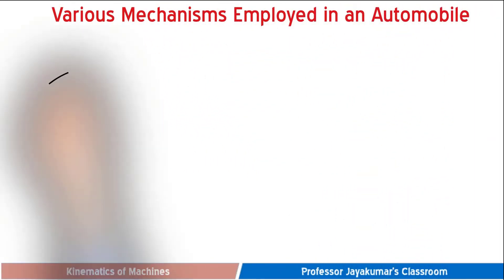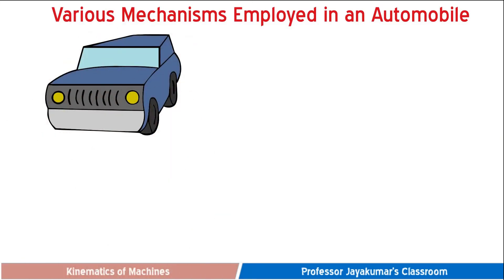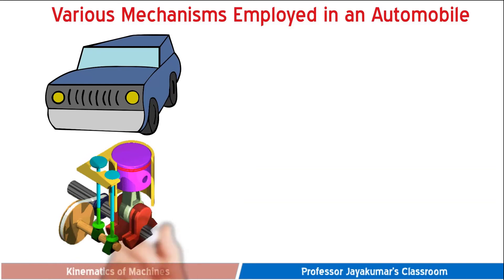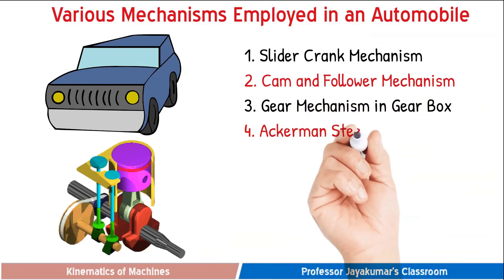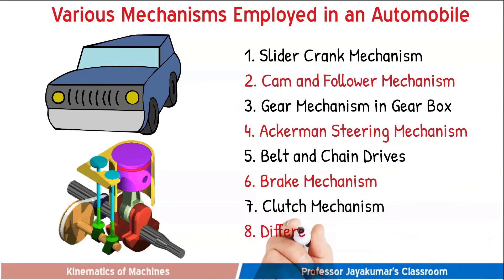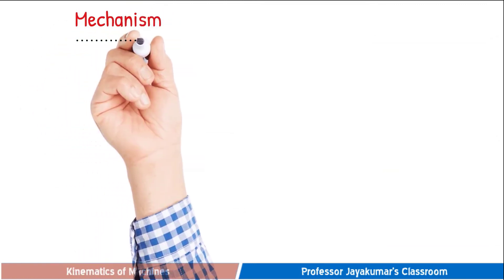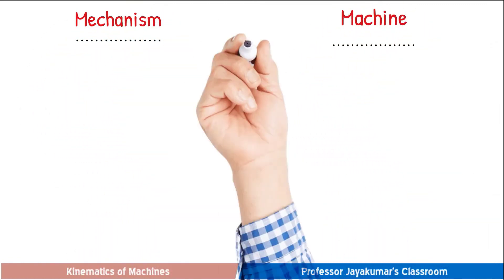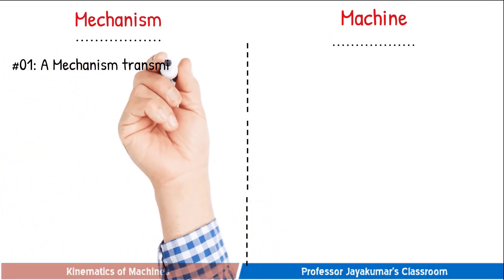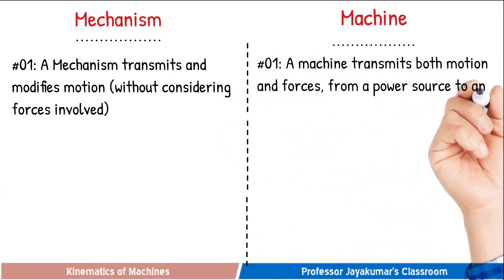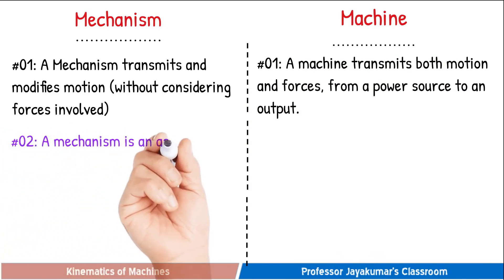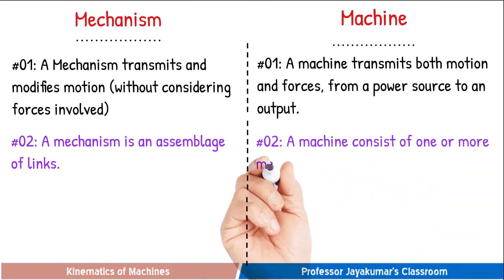Let us take a car, which is a machine. This machine employs many mechanisms to achieve the required functions. Some of the mechanisms employed in a car are: the slider-crank mechanism in the IC engine, cam and follower mechanisms used to operate the valves, gear mechanisms used in gearboxes, Ackermann steering mechanism, chain drives, brake mechanism, clutch mechanism, and differential mechanism. The differences between mechanism and machine are summarized in a table: a mechanism transmits and modifies motion, whereas a machine transmits both motion and forces; a mechanism is an assemblage of links, whereas a machine consists of one or more mechanisms.